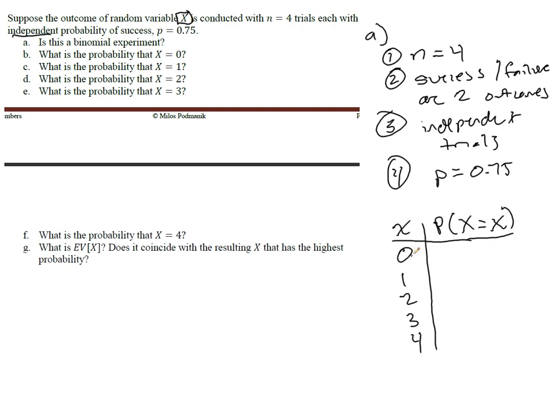And now, to figure out how many ways are to get 0 successes, we'll do 4 combination 0, the probability of success, which is 0.75, raised to the number of successes, which in this case is 0, because we're going to have 0 successes, and 4 failures. Well, this one's going to be 4 choose 1 success, so that means we'll have 0.75 to the 1st power and 0.25 to the 3rd power.